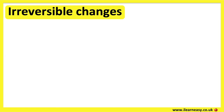Irreversible changes. Irreversible changes means the changes can't be undone and a new material is formed. Now let's look at some examples.